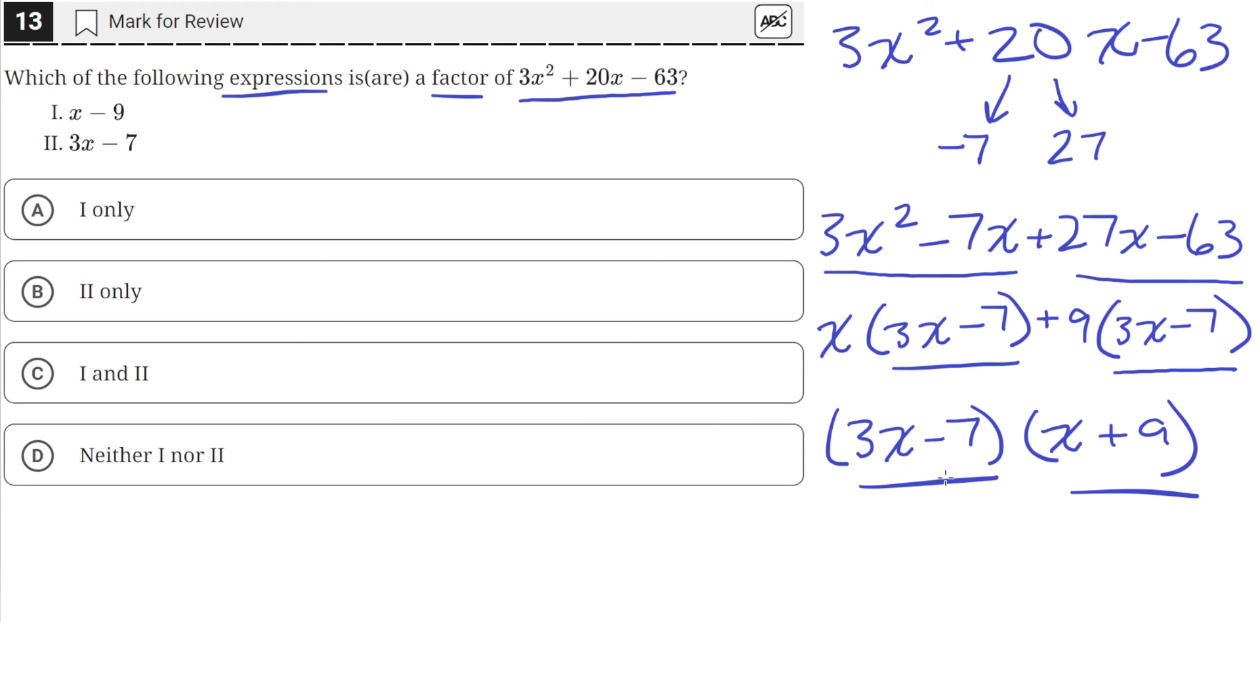So one of our factors is 3x minus 7, which is its choice, the second one here. And then the other factor is x plus 9. Well, x plus 9 is not here.